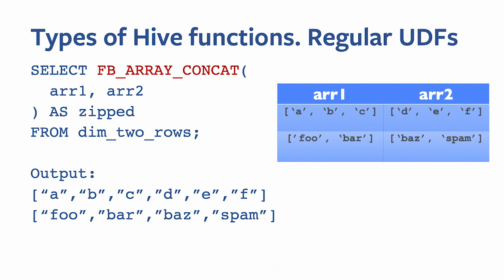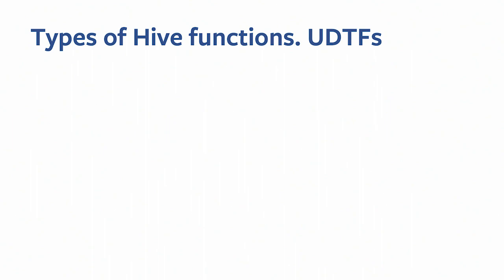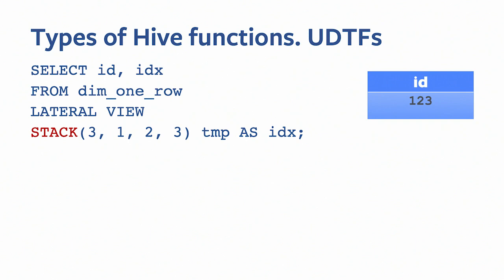For user-defined table functions, consider a simple example with a single row having a column ID, and a query that selects ID plus another column called index coming from the UDTF stack. Stack is a commonly used UDTF — it accepts a variable number of arguments where the first argument is the count of values to produce. Here the stack UDTF produces three values paired with ID one to three, so from one row we get three rows as output.